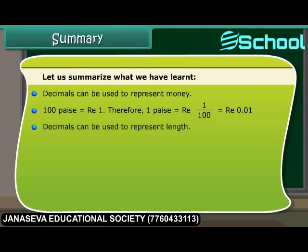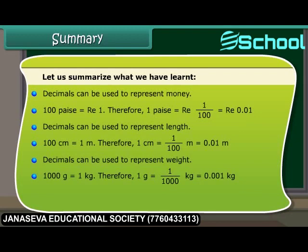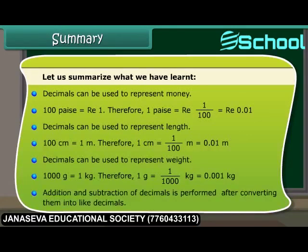Decimals can be used to represent length: 100 centimeters equal 1 meter, so 1 centimeter equals 1/100 meter, which equals 0.01 meter. Decimals can be used to represent weight: 1000 grams equal 1 kilogram, so 1 gram equals 1/1000 kilogram, which equals 0.001 kilogram. Addition and subtraction of decimals is performed after converting them into like decimals.